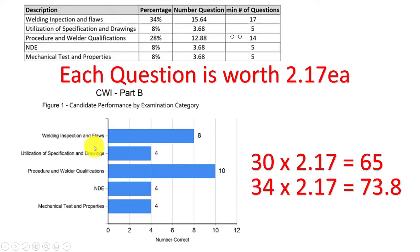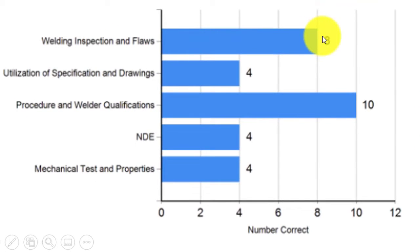This is what they sent him back right here. The welding inspection and flaws has 17 questions and he got eight right, so he missed a total of nine. This is something he should concentrate on. If he would have got four more of these right, he would have made a 73 and passed.